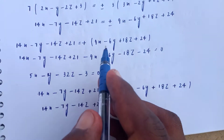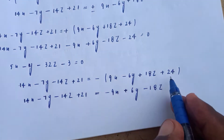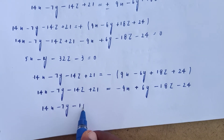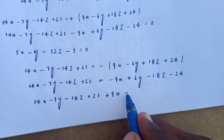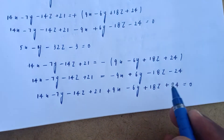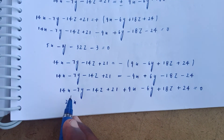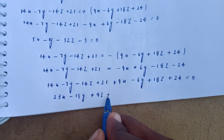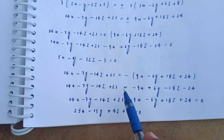For the negative case: minus 9x and the positive terms give minus 2x; plus 6y minus 6y; plus 8z minus 18z. Combining: 14x minus 9x gives 5x; minus 7y minus 6y gives minus 13y; minus 14z plus 18z gives 4z; plus 21 minus 24 gives minus 3. And 23x minus 13y plus 4z plus 45 equal to 0. These are the two plane equations, worth 5 marks or more.